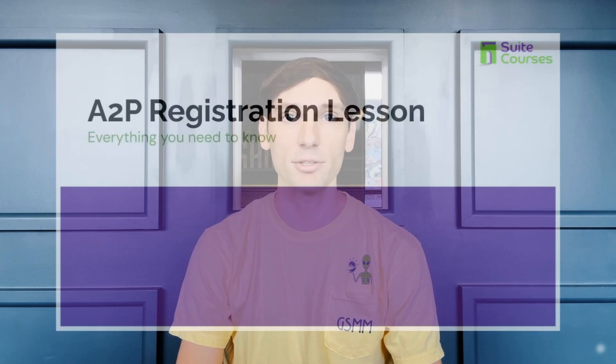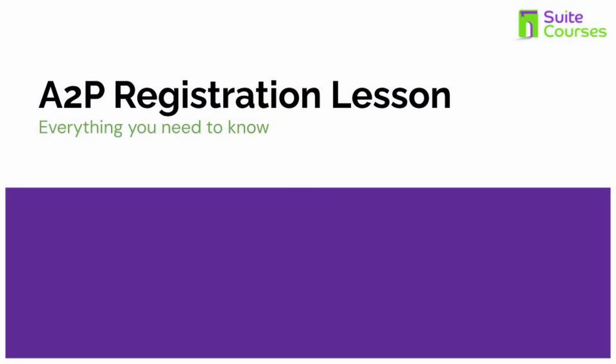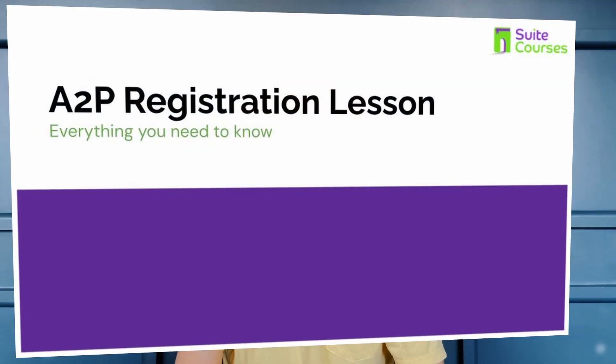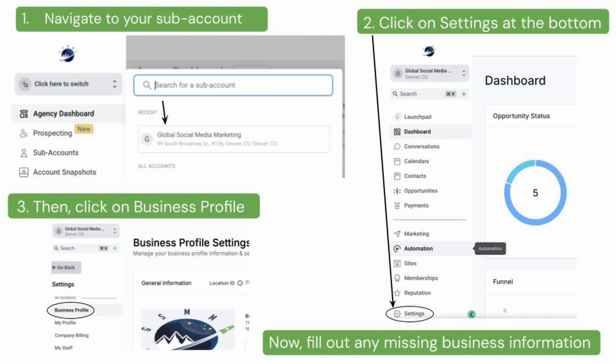I've prepared a slide deck to help you navigate this essential step and go high level. Head over to your High Level subaccount dashboard and navigate to Settings and then Business Profile. You will then need to fill out any business information that is empty in order to start the A2P registration.